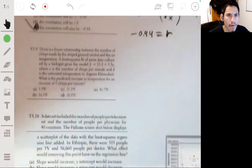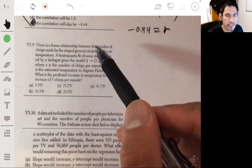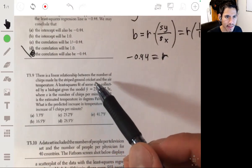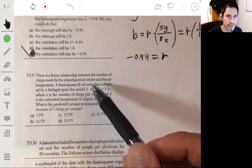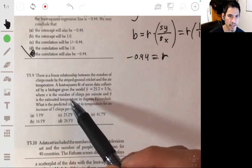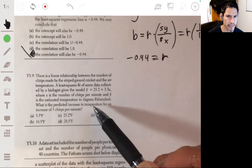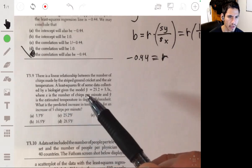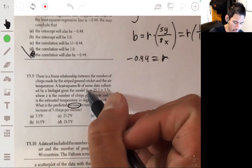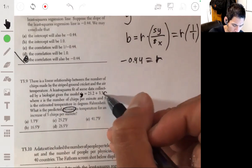And number 9. There is a linear relationship between the number of chirps made by the striped brown cricket and the air temperature. The least squares fit of some data collected by a biologist gives the model y hat equals 25.2 plus 3.3x, where x is the number of chirps per minute, and y hat is the estimated temperature in degrees Fahrenheit. What is the predicted increase in temperature for an increase of 5 chirps per minute? Okay, so notice it's saying predicted increase, not predicted value, meaning that we just want to see how much it would go up by, how much would y go up by if you increased x by 5.